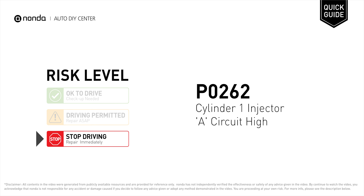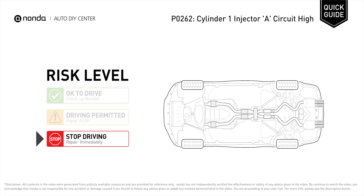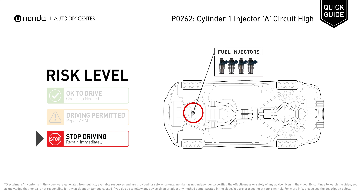P0262 is a diagnostic trouble code for Cylinder 1 Injector A Circuit High. Under this circumstance, stop driving and repair your vehicle immediately. It indicates that the PCM has detected a higher reference voltage coming from Cylinder 1's fuel injector than what was specified by the vehicle manufacturer.